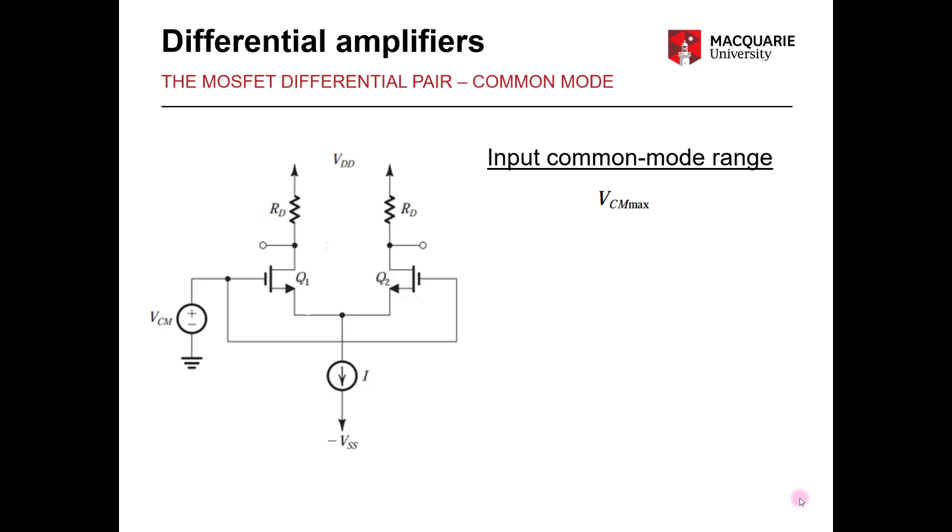So this maximum voltage is limited by the fact that the transistors need to remain in the saturation region. So we know from our previous work with MOSFETs that the condition for saturation is that VDS be more than or equal to VGS minus VT.